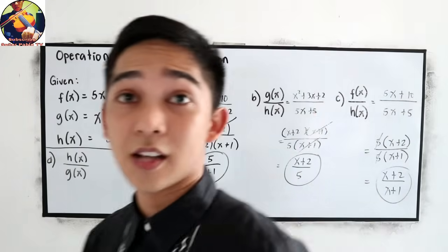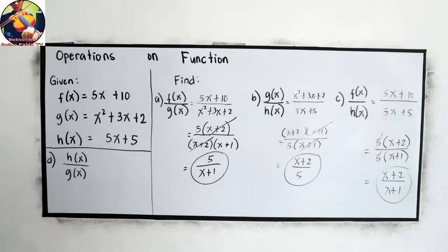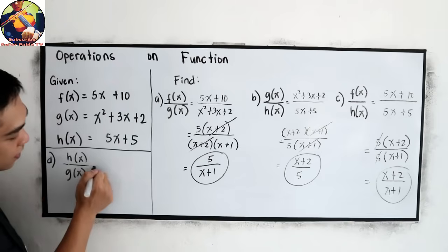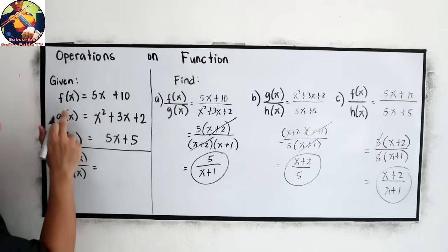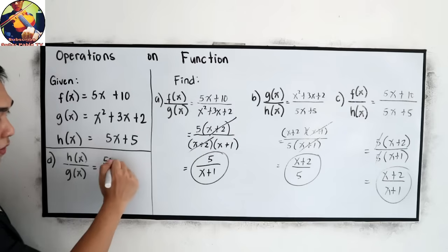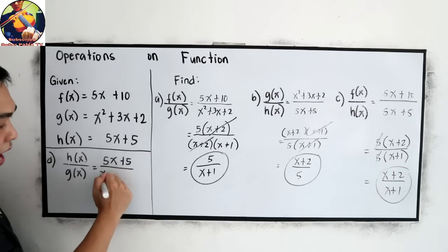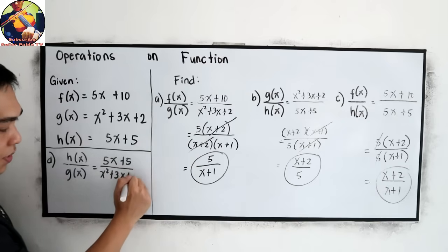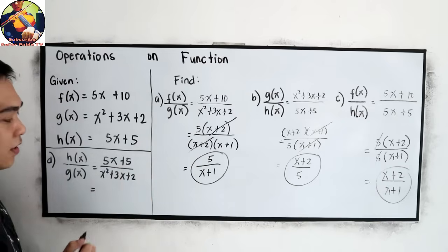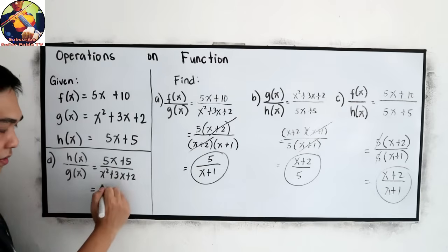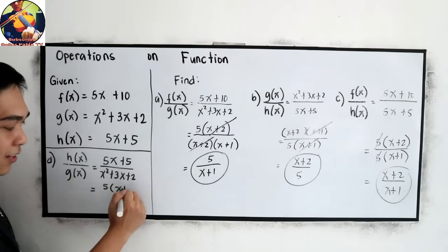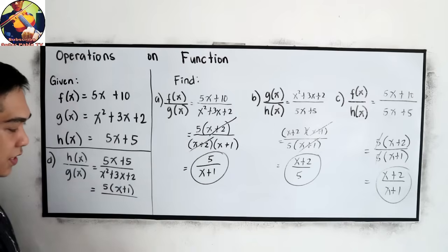And of course, our last letter, h of x over g of x. h of x, the given is 5x plus 5 over g of x is x squared plus 3x plus 2. Now, factor the numerator. The common factor is 5 quantity x plus 1 over denominator x plus 2, x plus 1.